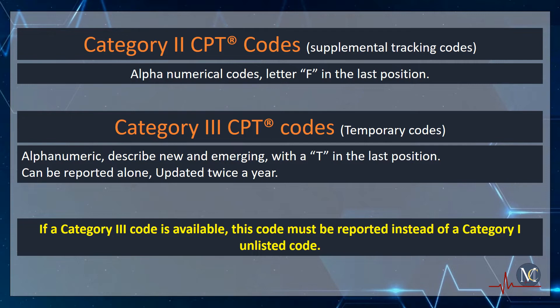Category 3 CPT codes are also known as temporary codes. These codes are also alphanumeric. They describe new and emerging procedure services or technologies. These codes end with the alphabet T in the last position. Category 3 CPT codes can be reported alone, and they are updated twice a year.